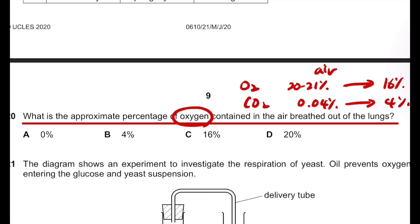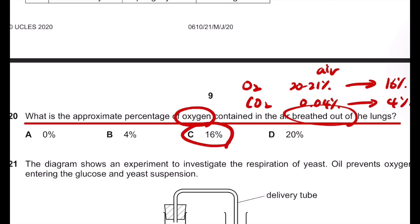So it's asking about the oxygen in the air breathed out of the lungs. The answer should be C, 16 percent.